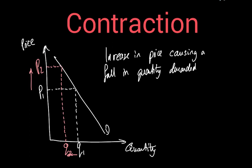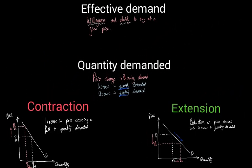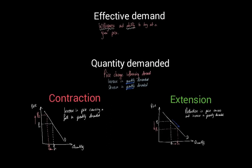So that's a quick reinforcement of the key terms needed in this section of the course. The key terms to use right from the very start are: effective demand — understanding that it requires both willingness and ability; quantity demanded, as opposed to simply 'demand'; and extensions and contractions of demand. Try to make sure you use these terms right from the very start — that will help you a lot later on in the course.